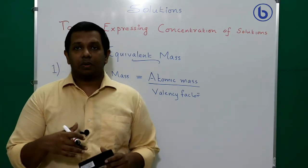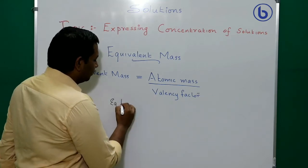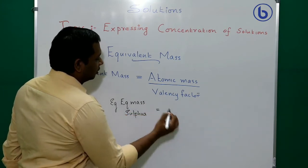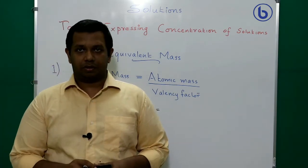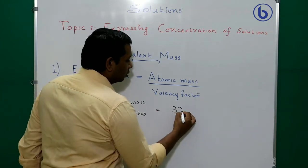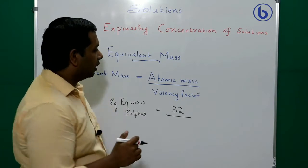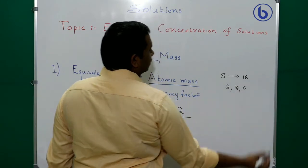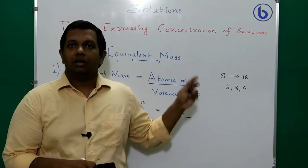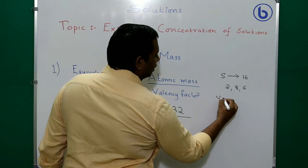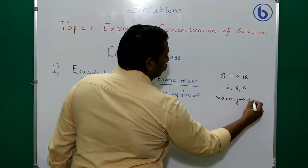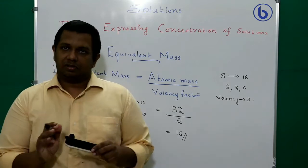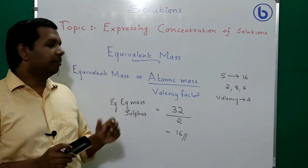Similarly, equivalent mass of sulfur. Sulfur has atomic number 16, so its atomic mass is 32. Its electronic configuration is 2, 8, 6 — it needs 2 more electrons to complete the octet, so its valency is 2. Equivalent mass of sulfur = 32 ÷ 2 = 16.